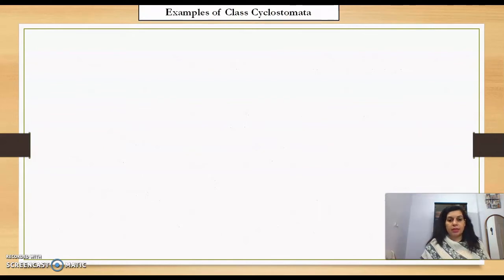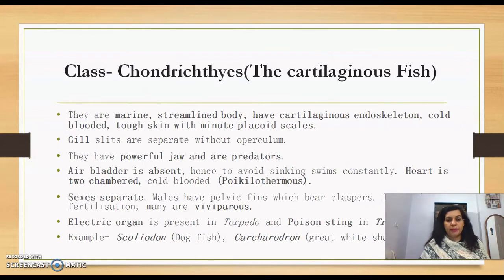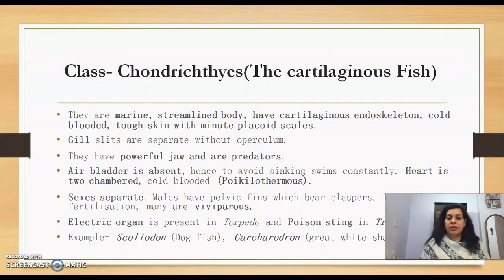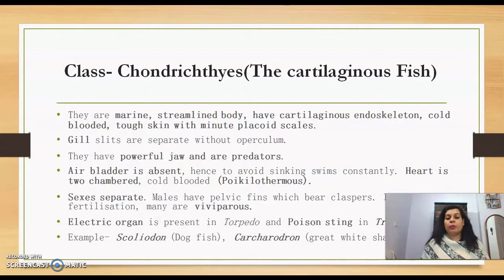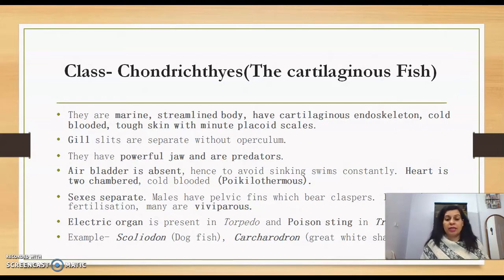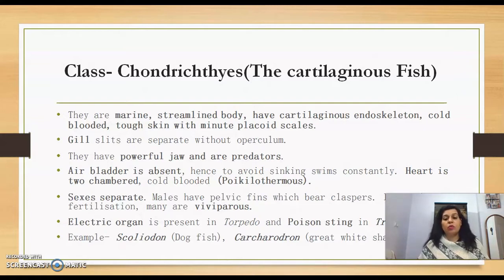Class Chondrichthyes are cartilaginous fish found in marine environments. They have a streamlined body, cartilaginous endoskeleton, and are cold-blooded. They have tough skin with placoid scales, and gill slits are separate without an operculum. They are powerful predators. The air bladder is absent, so to avoid sinking they must swim constantly. The heart is two-chambered and they are poikilothermous, meaning their body temperature varies with the environment.